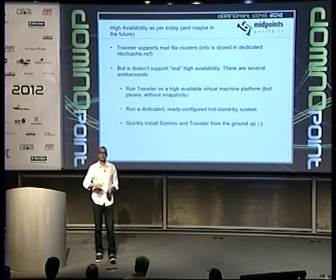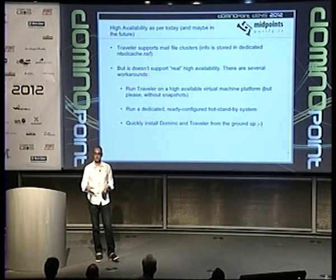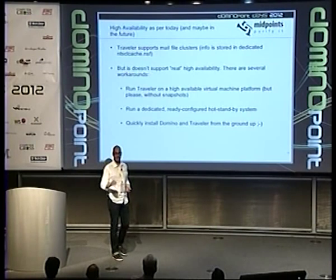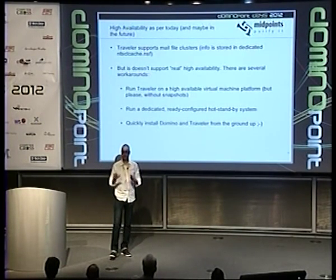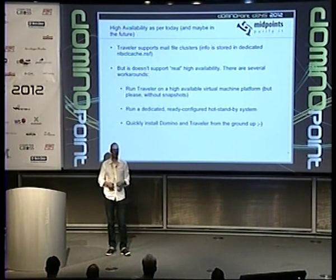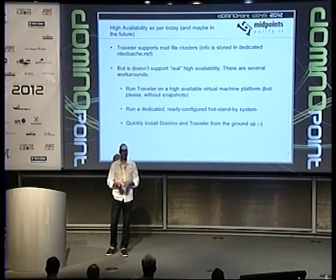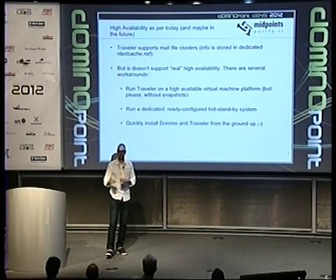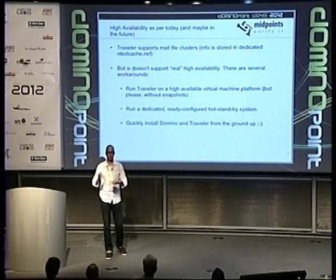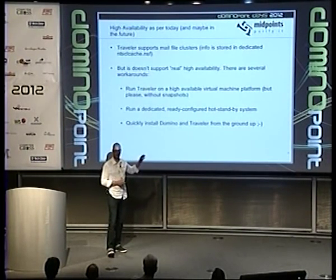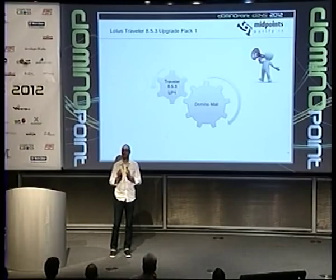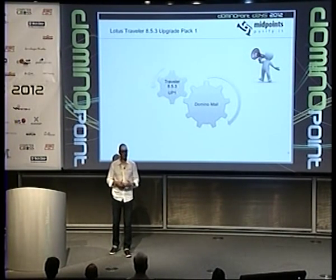That will make it easier going to the new high availability. But it's a local database — when your hard disk crashes, you can't replicate the database, everything is gone. If you denied a device because it was stolen last year and the Derby database crashes, you lose that information. Traveller by itself doesn't support clustering as of today. It supports mail clusters, so if your mail server goes down it uses the failover, but you don't have real HA today. You can clone a system, run a hot standby, or just install from scratch in 15 minutes.